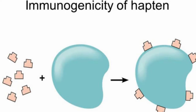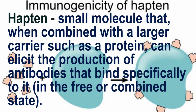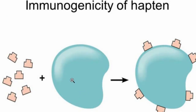We have hapten molecules, carrier molecules, and a complete antigen — these are all parts of an antigen. A hapten is a small molecule that by itself won't cause an immune response. Haptens bind to carrier molecules, also known as immunogens, and together they form the complete antigen, which actually provokes the immune response.